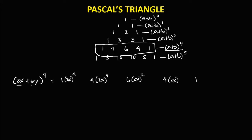Then for the second term, the exponent is increasing or going up. Since increasing, the last term has exponent 4. So we have 3y to the power 4, then 3y to the power 3, then 3y to the power 2, and 3y to the power 1. Since the sign is plus, therefore all signs are positive.